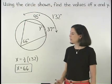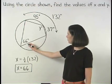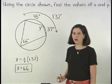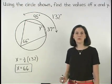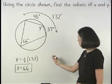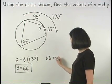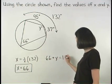This means that the angles that measure 66 degrees and y degrees are supplementary. So we can set up the equation 66 plus y equals 180.